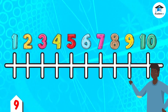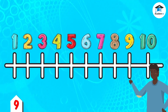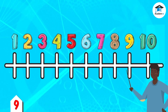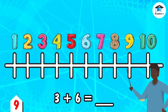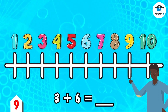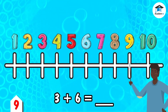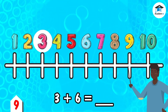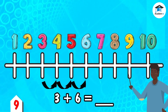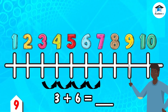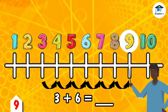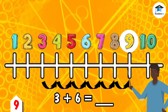Another way to add numbers is by using a number line. Let's find the sum of 3 and 6 using a number line. We start at number 3, then take 6 steps forward: 1, 2, 3, 4, 5, 6. We stop at number 9, so the sum is 9.